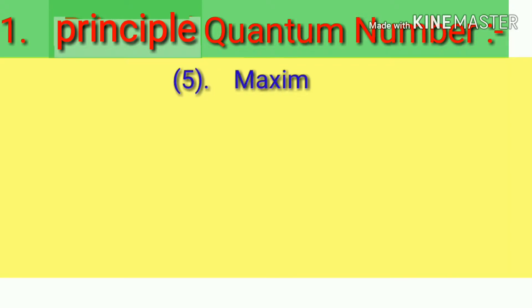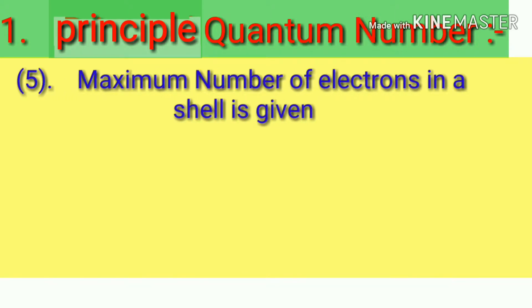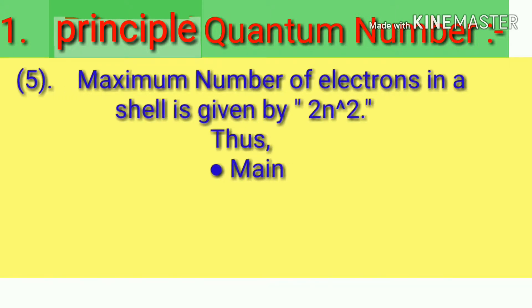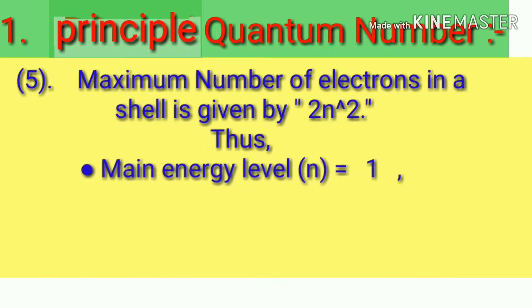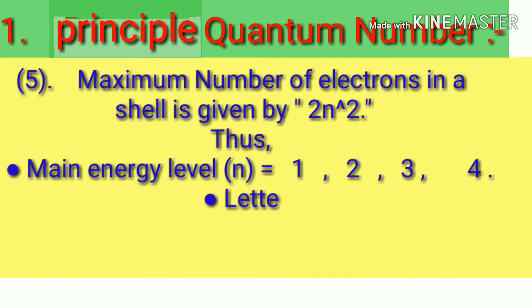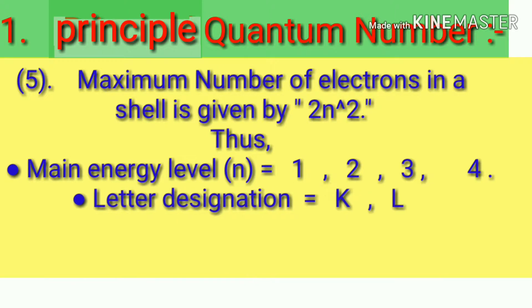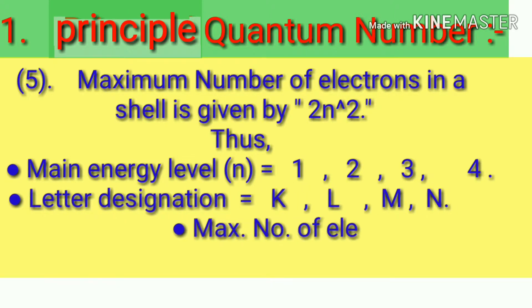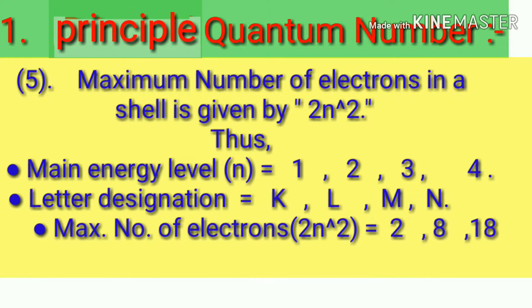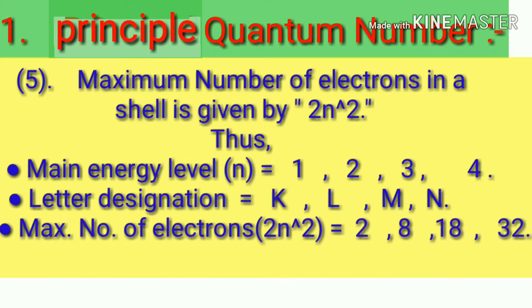Maximum number of electrons in a shell is given by 2N squared. Thus, main energy level N equals to 1, 2, 3, 4. Letter designation equals to K, L, M, N. Maximum number of electrons 2N squared equals to 2, 8, 18, 32.